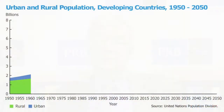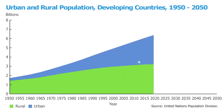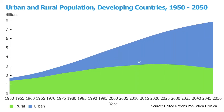Take a look at a couple of these graphs showing the projections of urban and rural population. The first one is for developing countries — Africa, Asia, Latin America — and the dark area is the urban population. As you can see, in about ten-some years the rural population of the developing countries is actually going to decline.